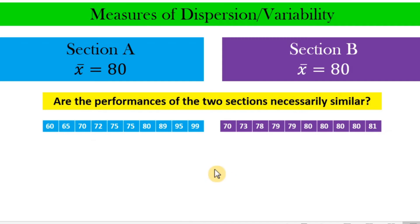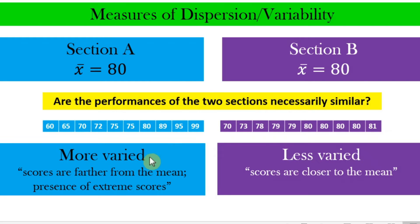We realize now that when two data sets have the same measures of central tendency, it is not necessary that the two sets of data have the same dispersion or variability. In fact, the scores in Section A are more varied because the scores are farther from the mean — 60 is far from 80, 65 is far from 80, 99 is far from 80, and 95 is far from 80. We say that this section is more varied.